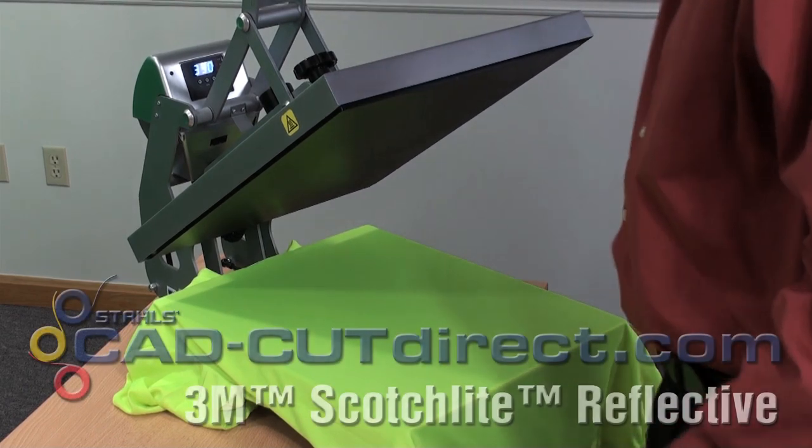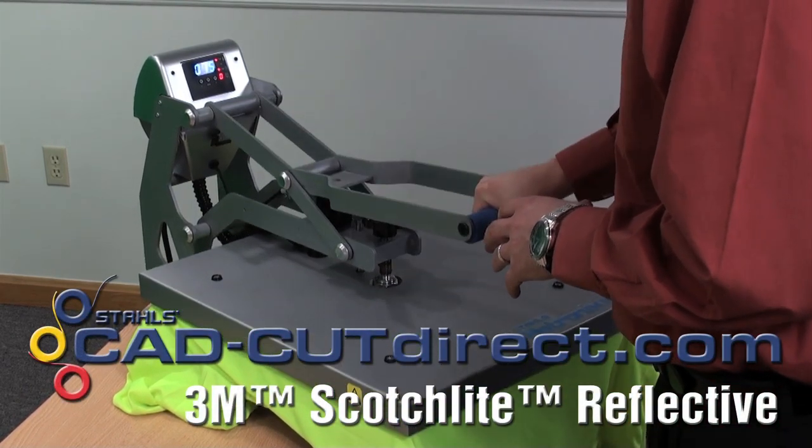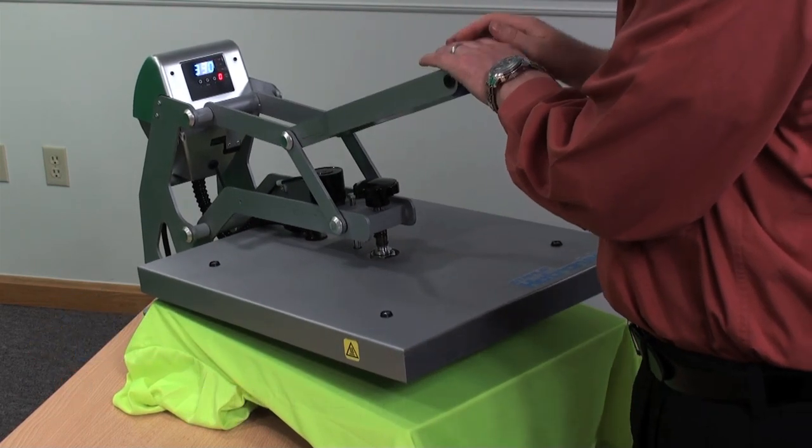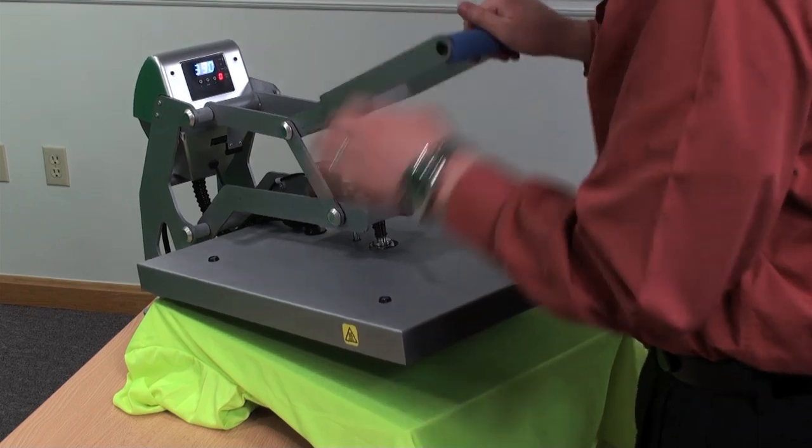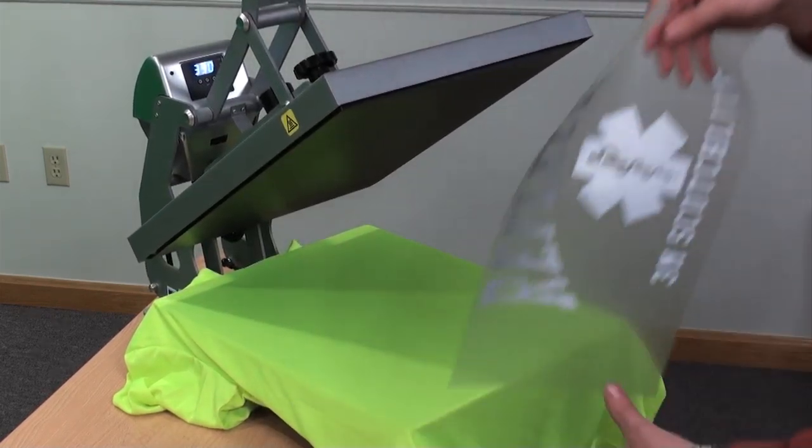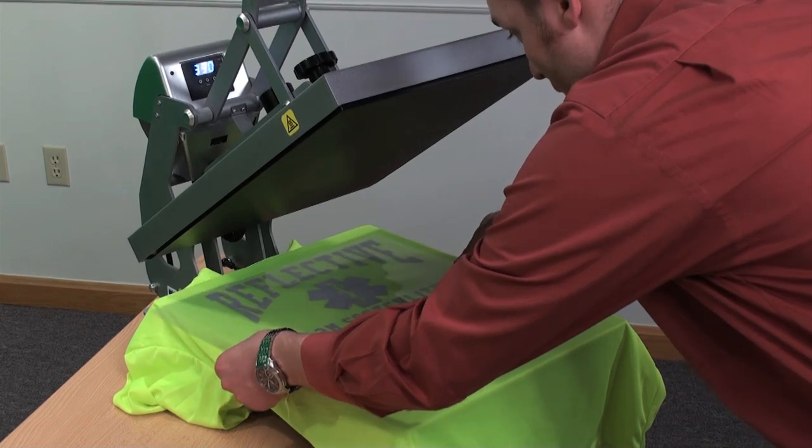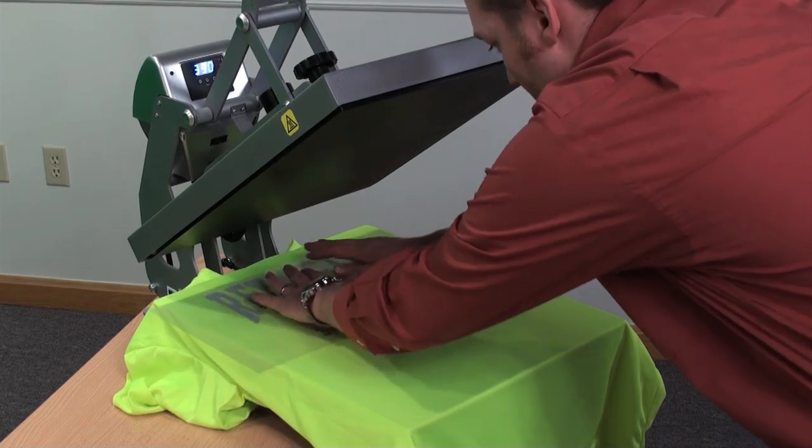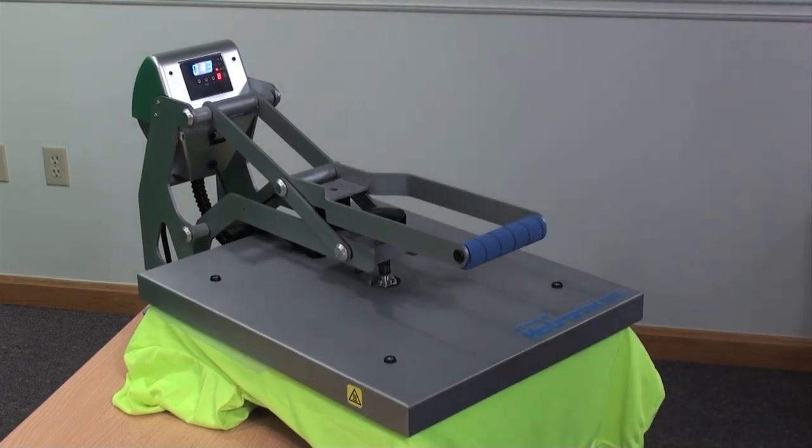And finally we'll press the 3M Scotchlite Reflective. Preheat the garment to remove the moisture and wrinkles. This particular material applies between 325 and 350 degrees for 10 to 20 seconds. So we'll press it at 15 seconds, all at a firm pressure or 8 on the Hotronix Clam. Position your design. Complete the application.